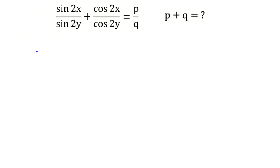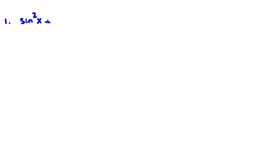Before solving the problem, I should tell you some identities that are useful. You can use time codes in the description to go straight forward to the problem. The first identity is: sine squared x plus cosine squared x equals 1.